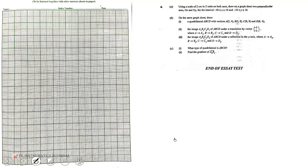Here we have question number six on transformation. Using a scale of two centimeters to two units on both axes, draw on a graph sheet two perpendicular axes OX and OY for the interval negative 10 to 10 on both axes. So let's do that - we draw our X and Y axes, then indicate the scale: two centimeters to two units on both axes.